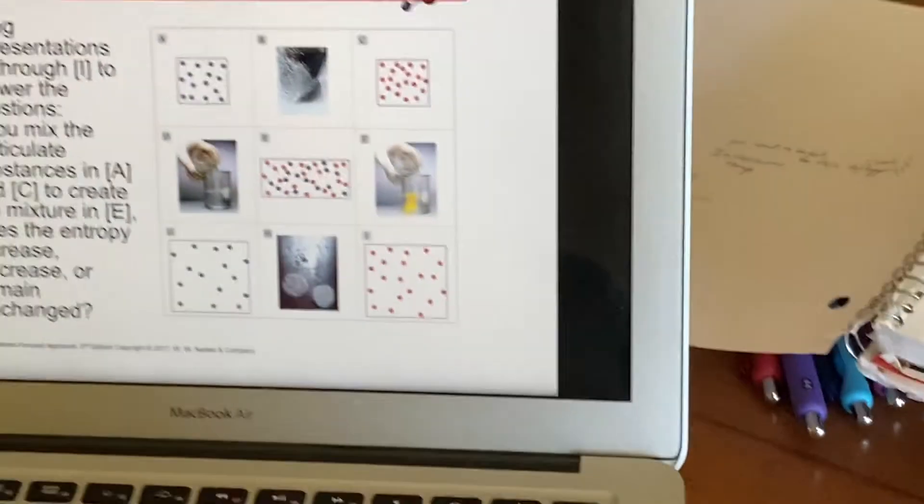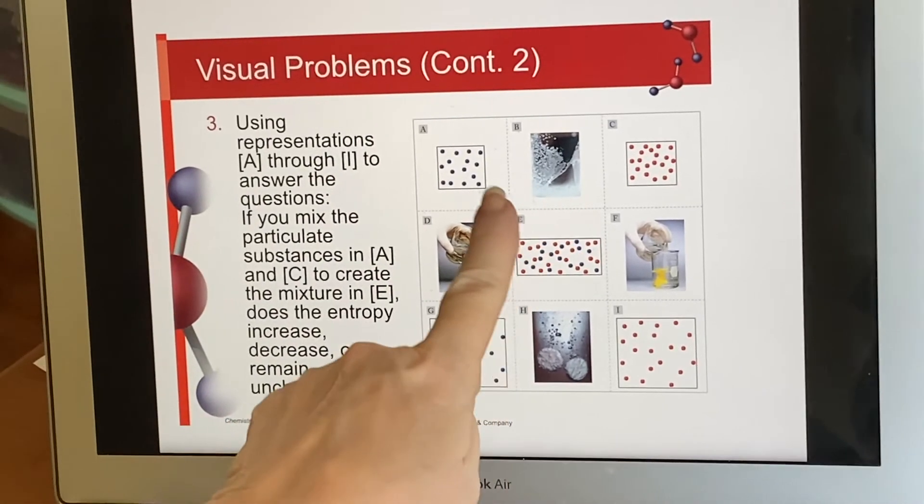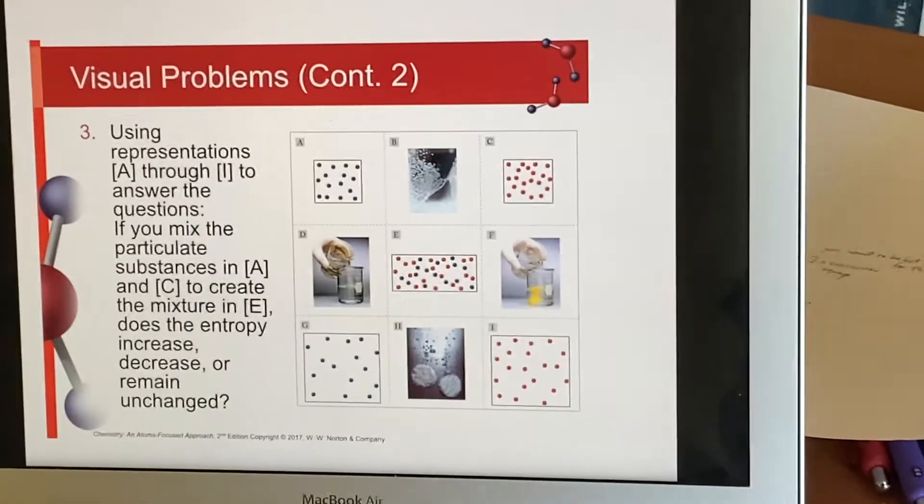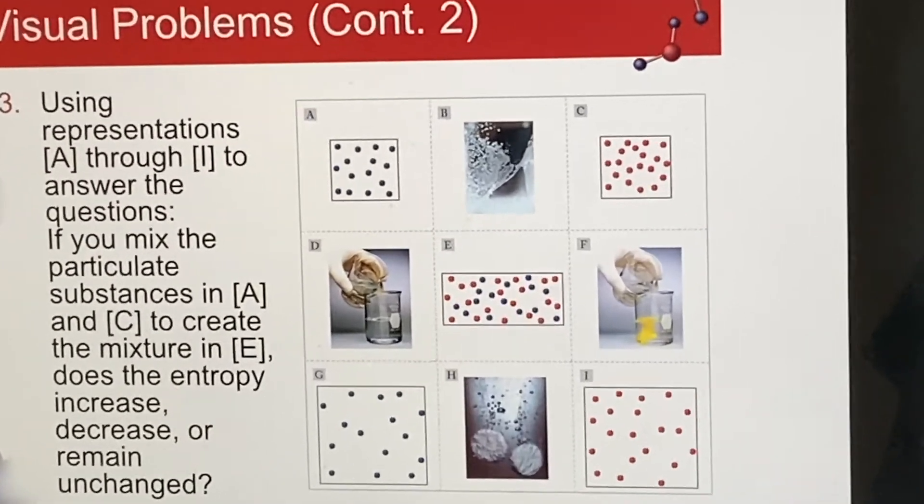And one more of these. Number three, they're going to mix A and C to create E. And it wants to know, did the entropy increase, decrease, or remain unchanged?